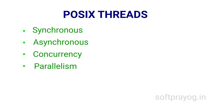Parallelism is when multiple tasks can execute at the same time. This can only happen on a multiprocessor system. So if a software system is designed with concurrent tasks and runs on a computer with multiple processors, you can have parallelism in addition to concurrency.